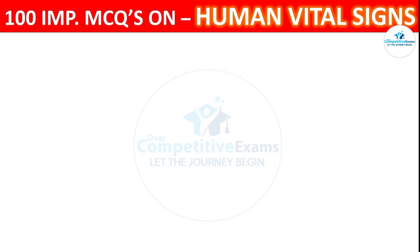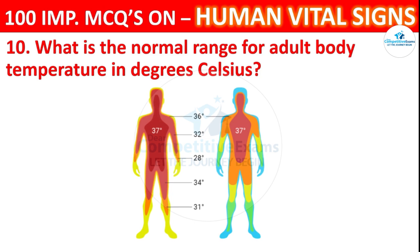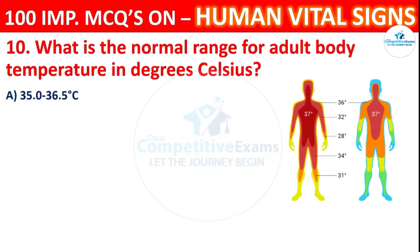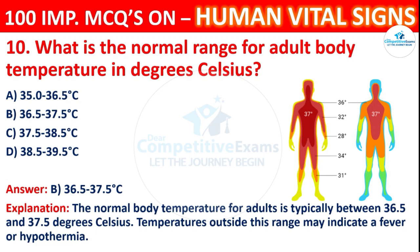Question 10: What is the normal range for adult body temperature in degrees Celsius? Options: 35 to 36.5°C, 36.5 to 37.5°C, 37.5 to 38.5°C, or 38.5 to 39.5°C. The correct answer is B, 36.5 to 37.5 degrees Celsius. The normal body temperature for adults is typically between 36.5 and 37.5°C. Temperatures outside this range may indicate a fever or hypothermia.